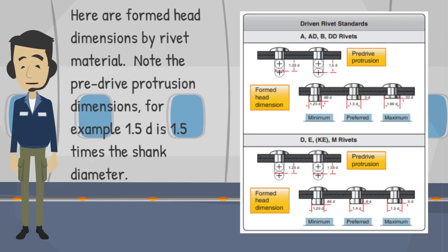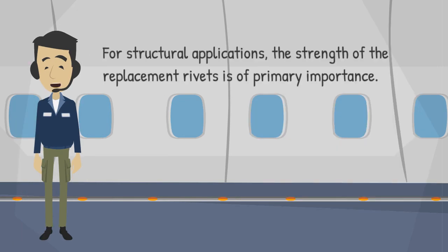Here are formed head dimensions by rivet material. Note the pre-drive protrusion dimensions — for example, 1.5D is 1.5 times the shank diameter.